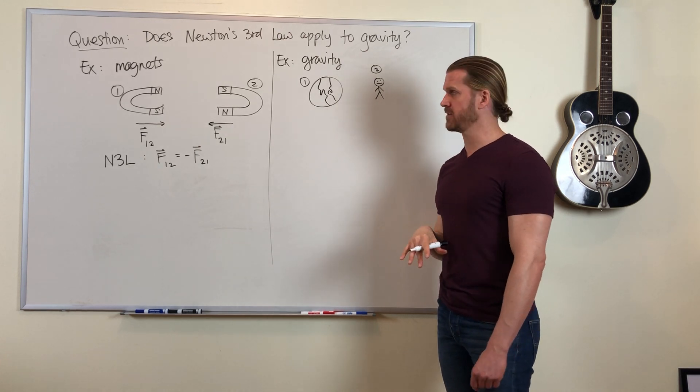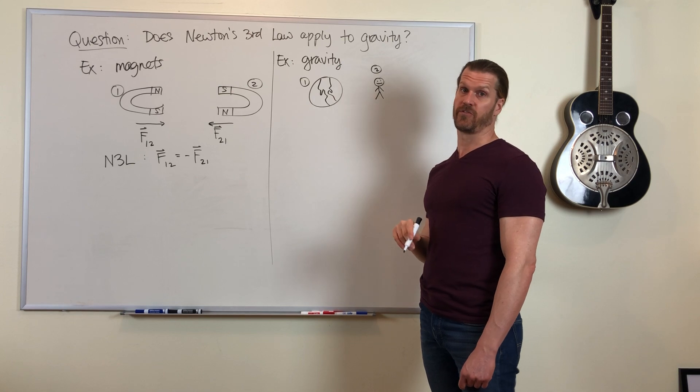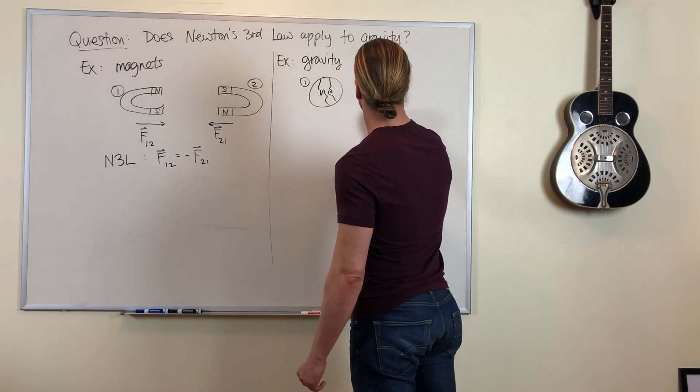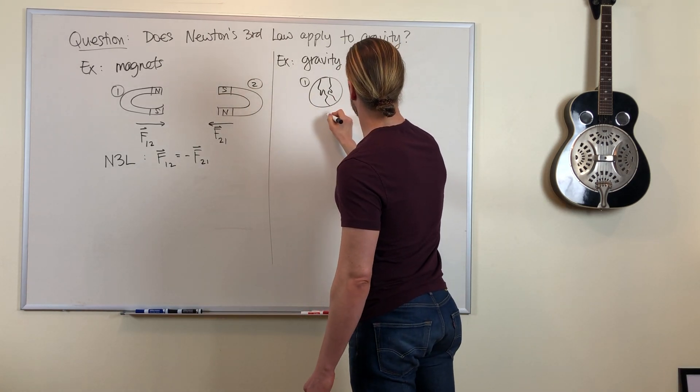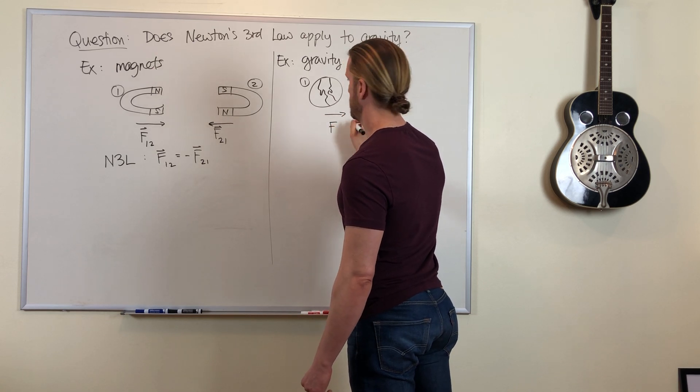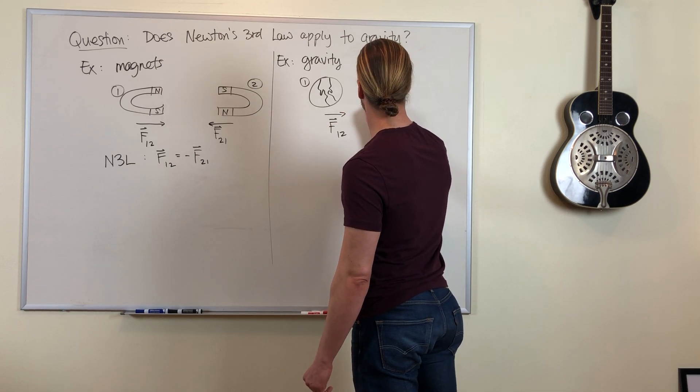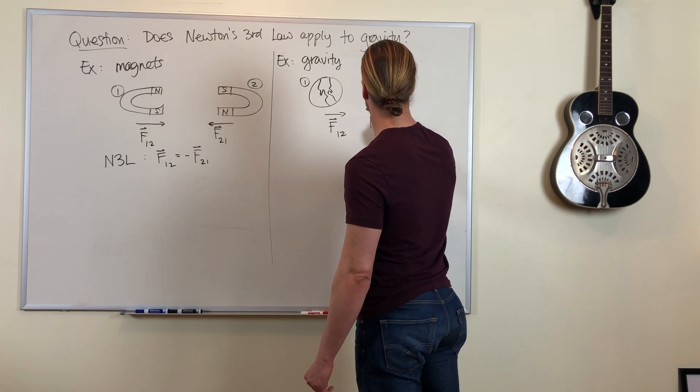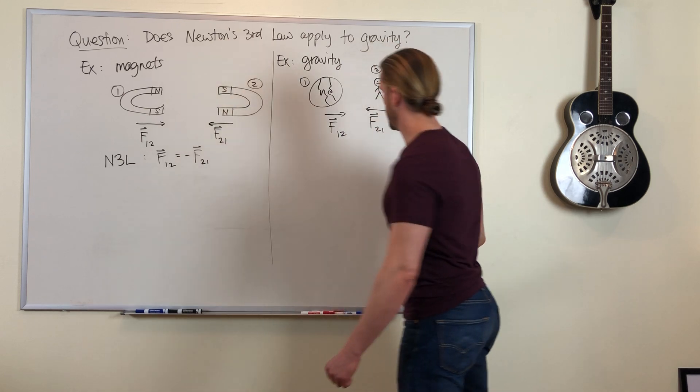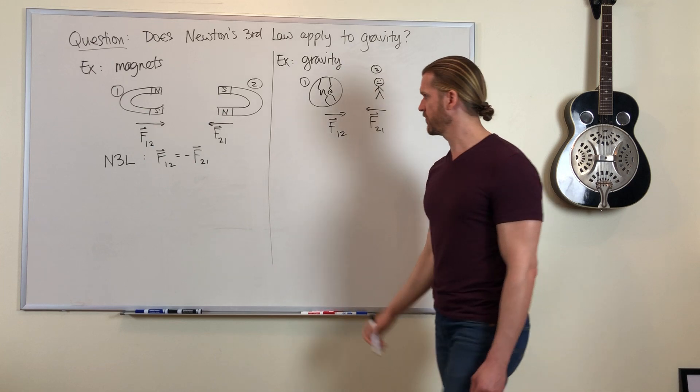Now this works conceptually the same way that magnetic force does. There is a force on object one due to object two. There's a force on object two due to object one. They're equal in magnitude and opposite in direction.